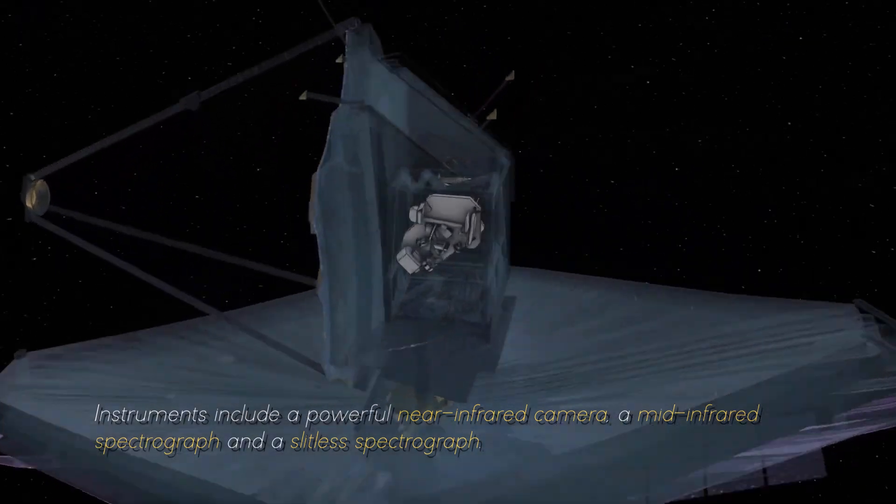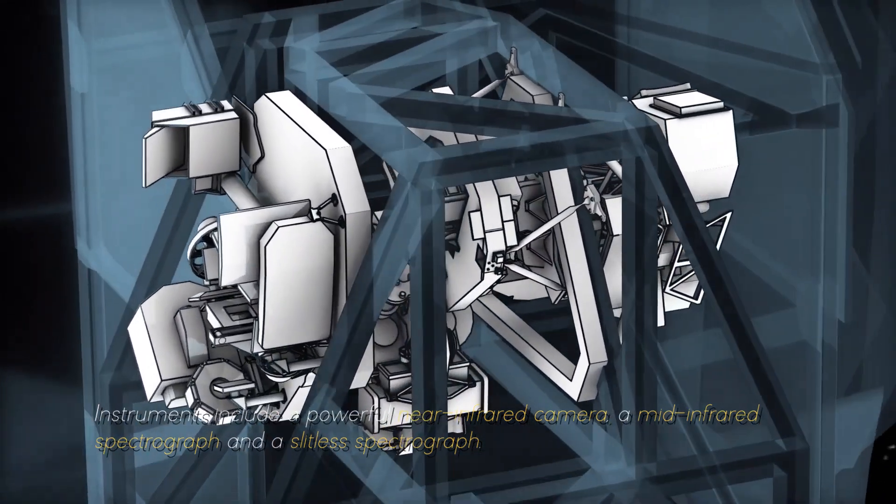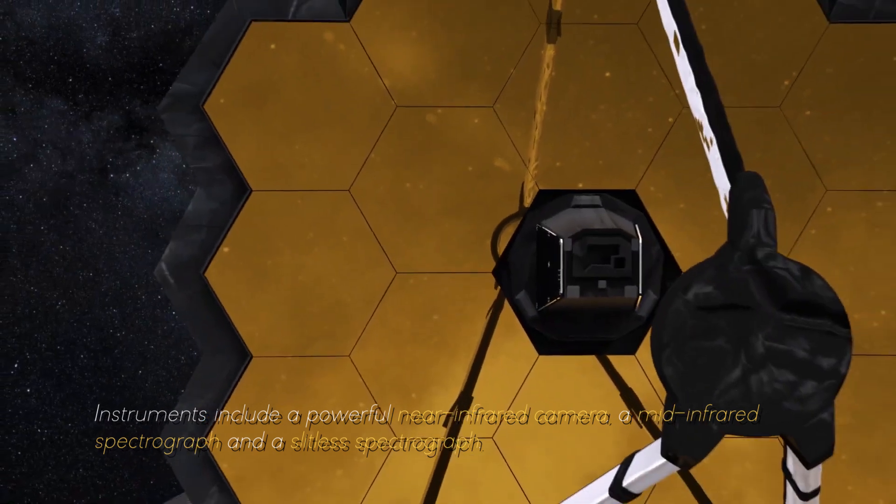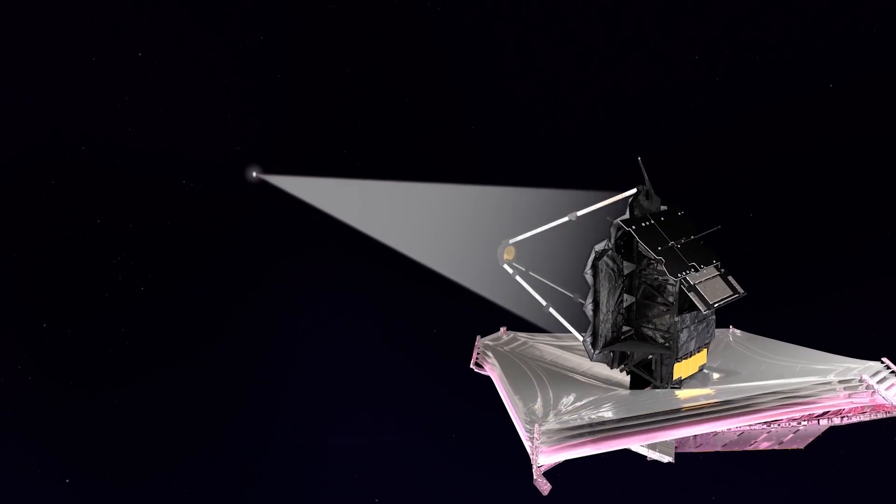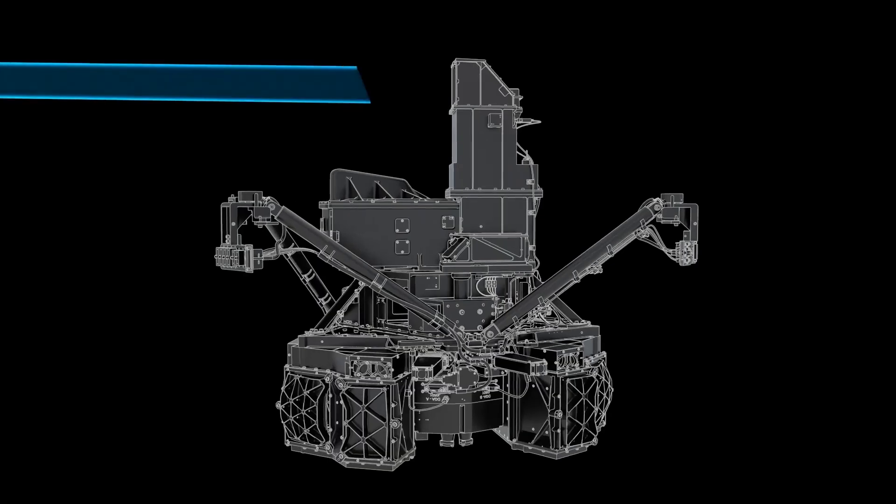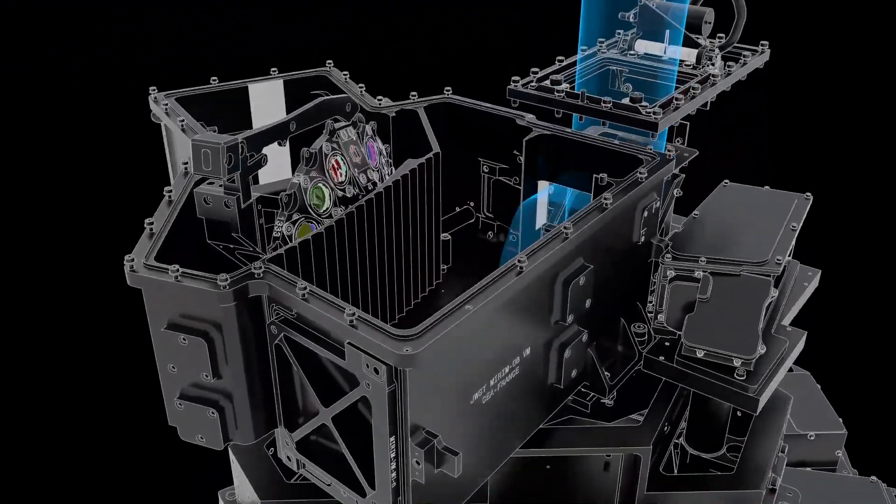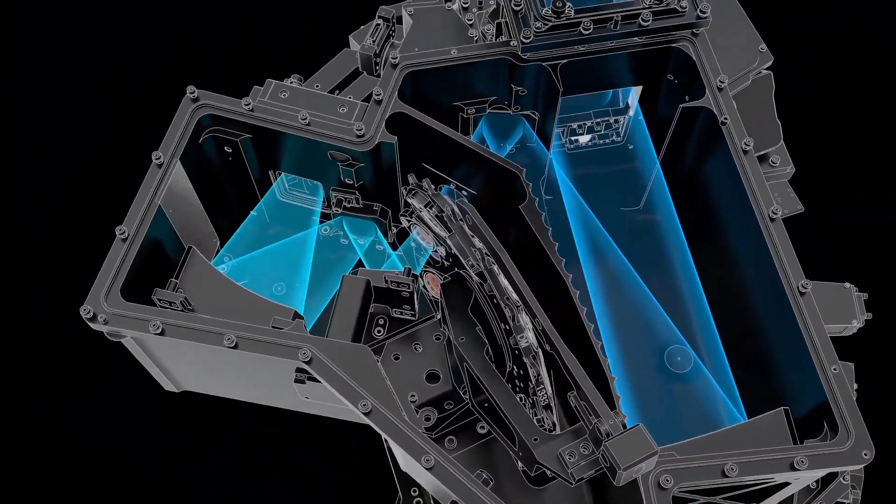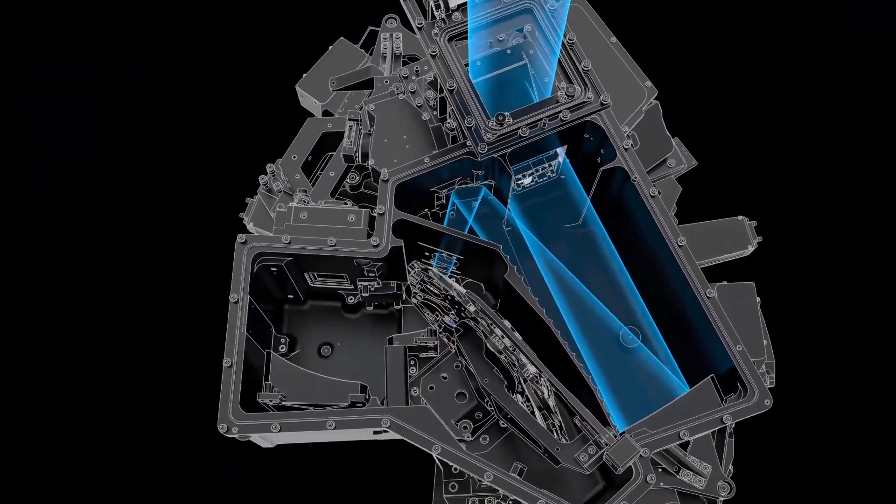This allows the JWST to collect and focus light from distant celestial objects with unmatched precision and sensitivity. Instruments include a powerful near-infrared camera, a mid-infrared spectrograph, and a slitless spectrograph. These instruments work together to capture images, measure spectra, and study the properties of objects ranging from the oldest galaxies to the planets of our solar system.